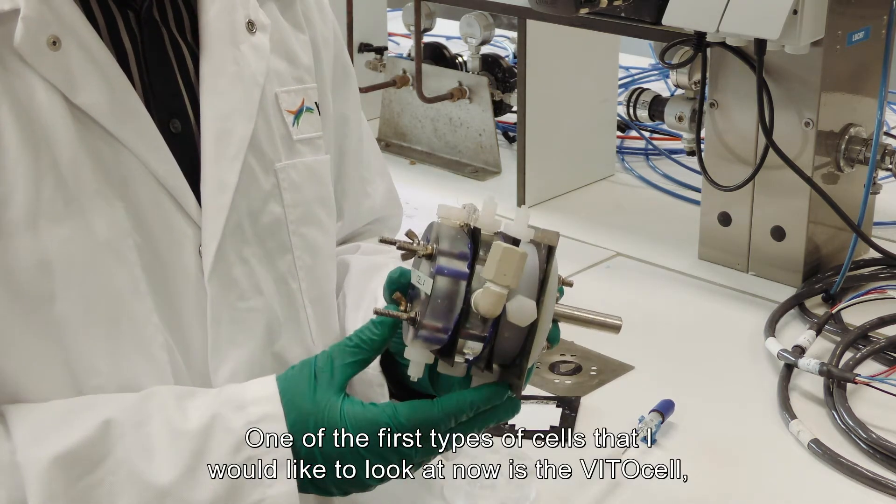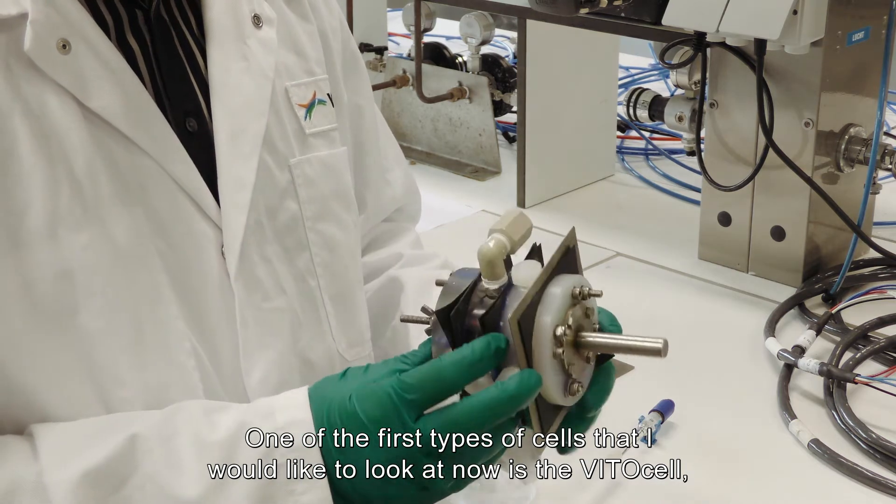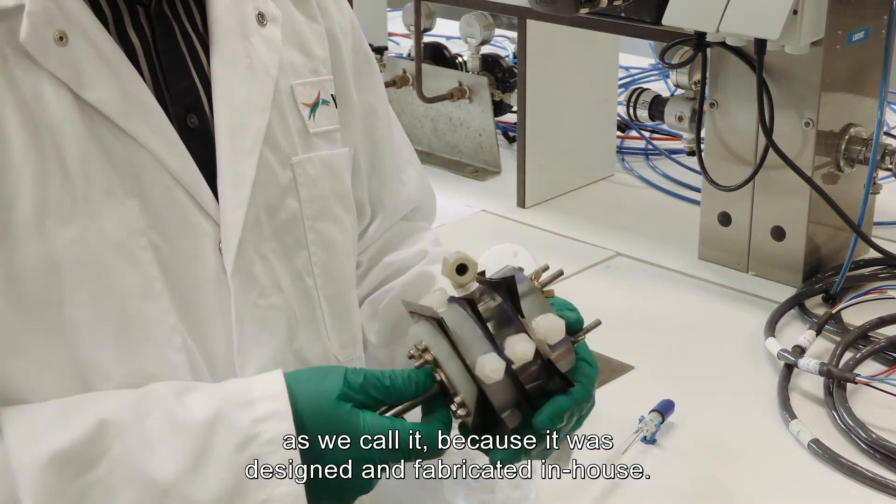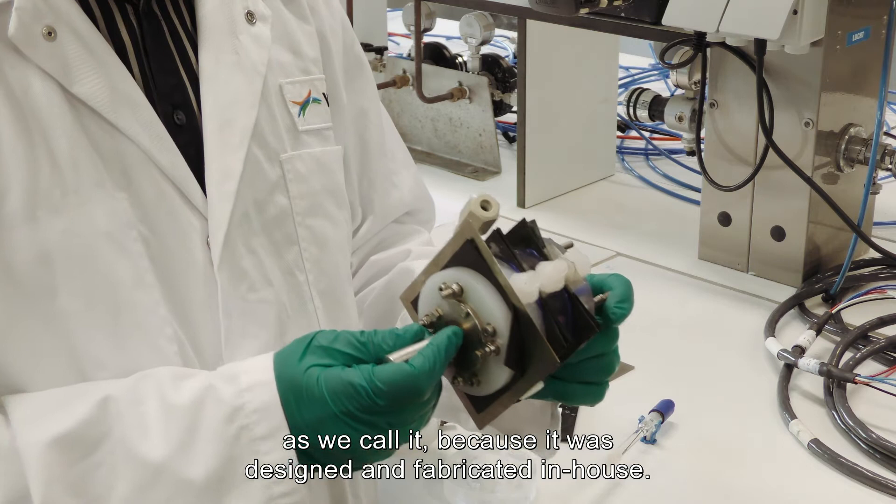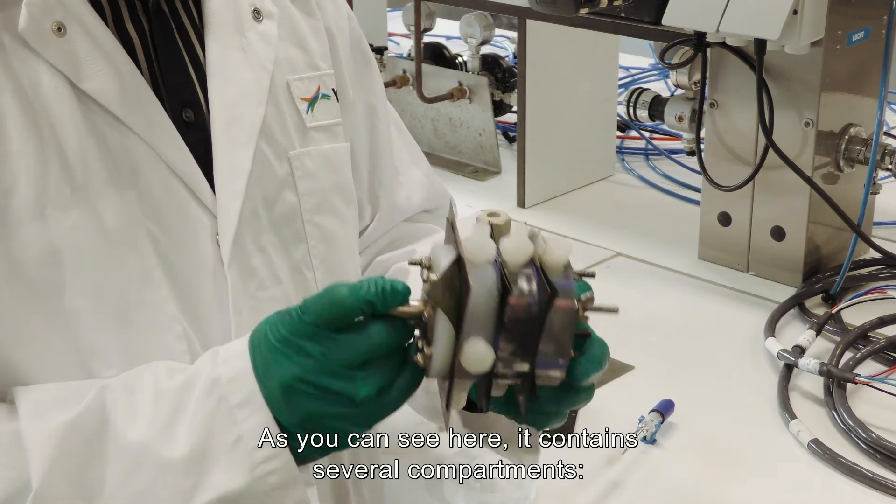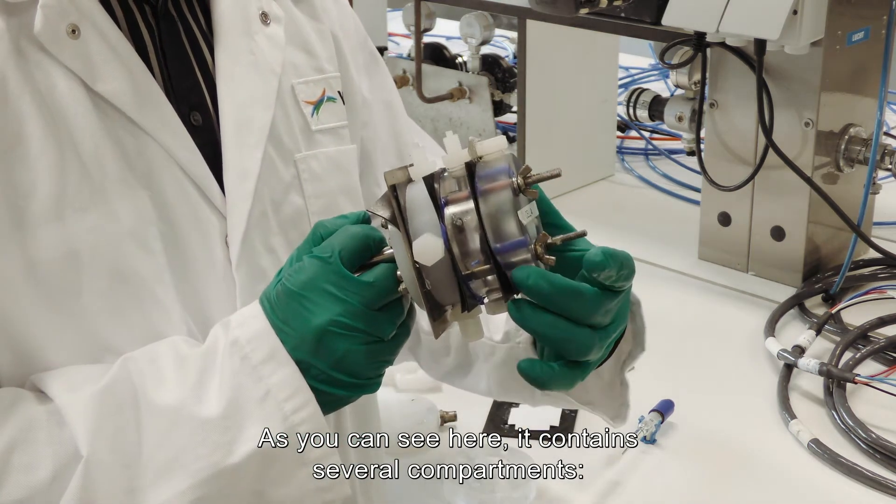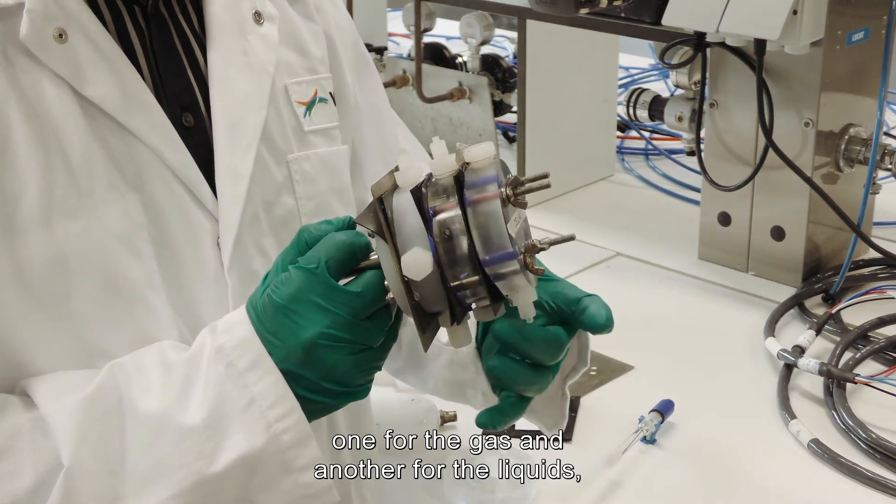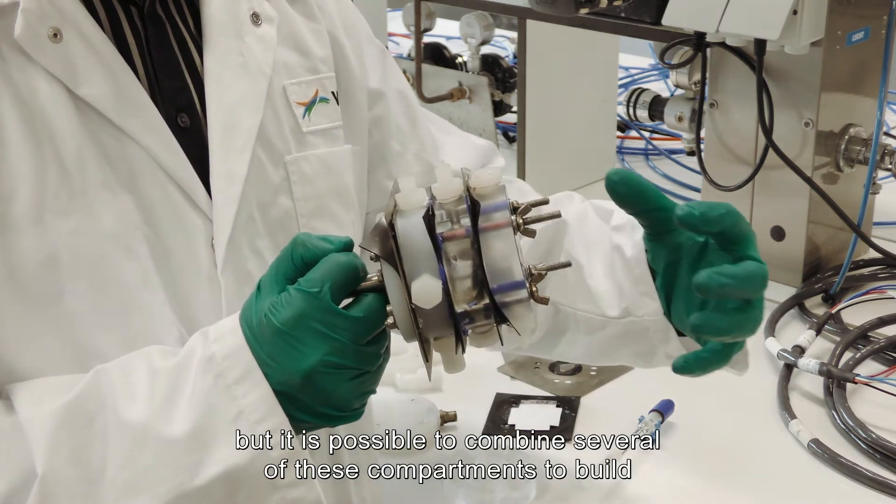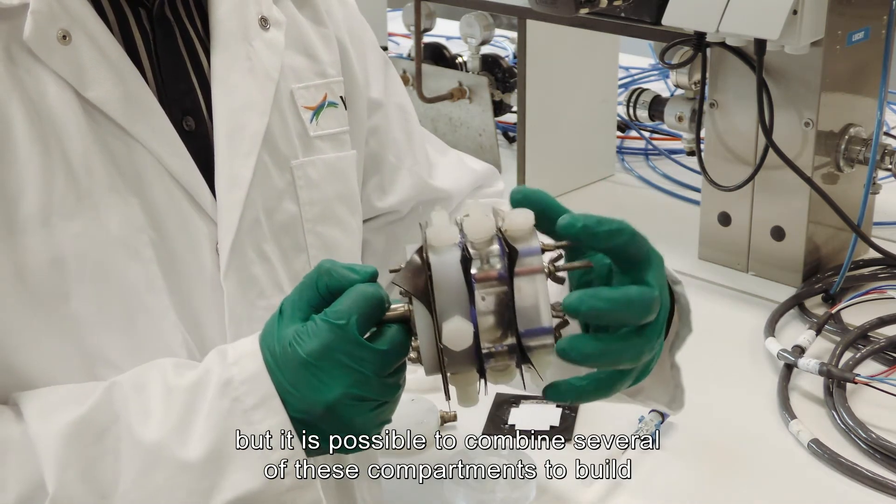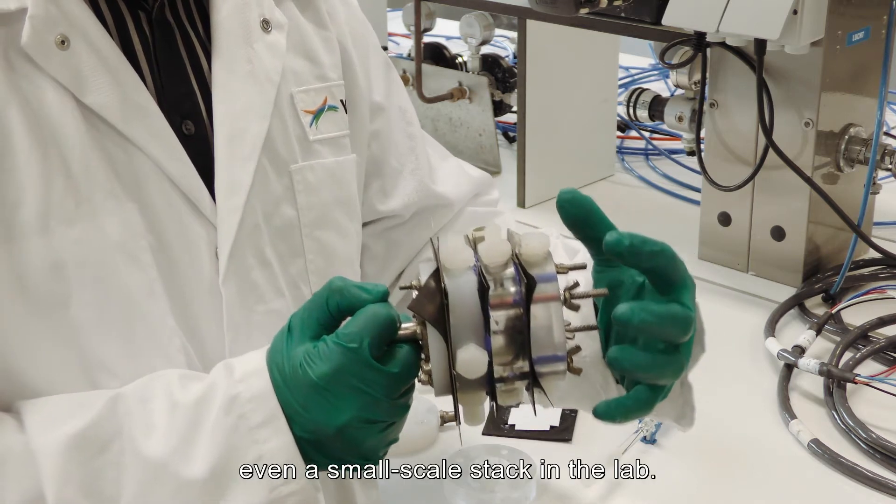One of the first type of cells that I would like to introduce now is a VITO cell, as we call it, because it was designed and fabricated in-house by our colleagues at VITO. As you can see here it contains several compartments, one for the gas and other for the liquid, but it is possible to combine several of these compartments to build even a small scale stack at the lab.